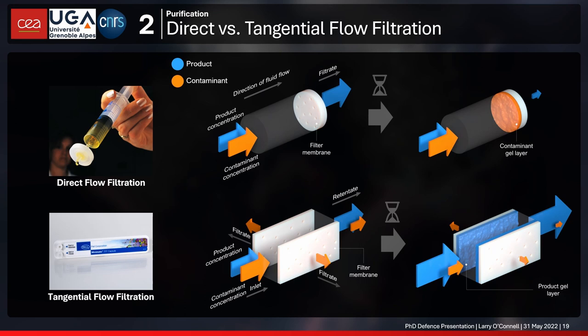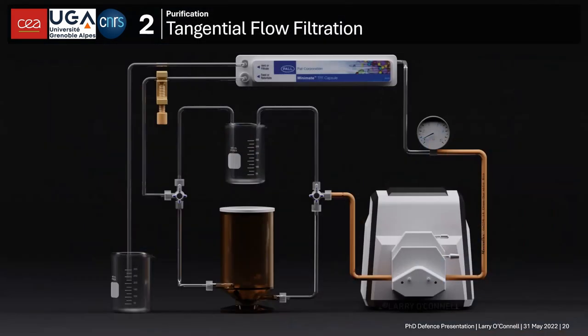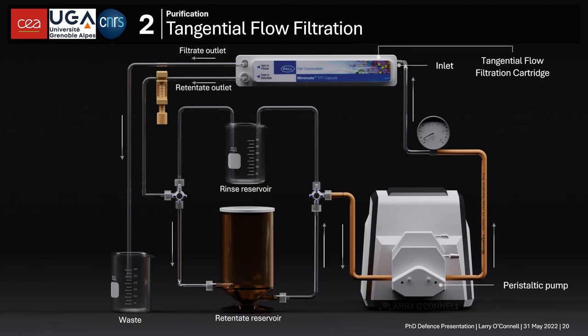We hoped to use TFF to cut down on time and cost for purification. In this TFF apparatus, the sample passes through a peristaltic pump into the inlet of the cartridge, and is separated into a product flow — which returns to the retentate reservoir and back into the circuit — and a filtrate which should contain all the waste. We used this for the first year or so for purifying our bacteriophages.